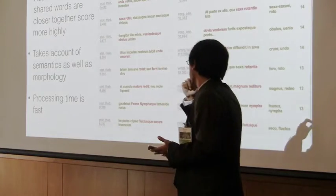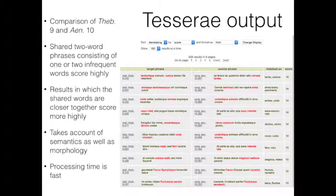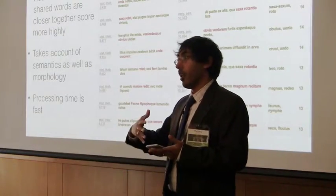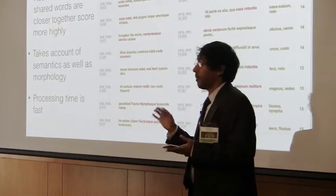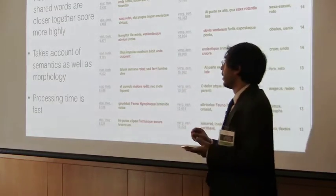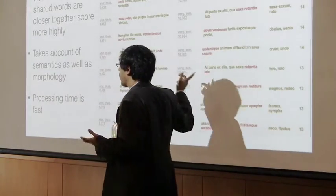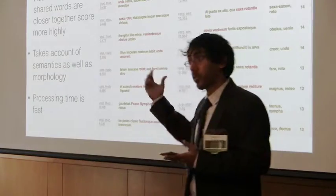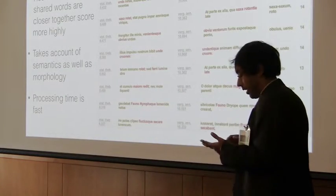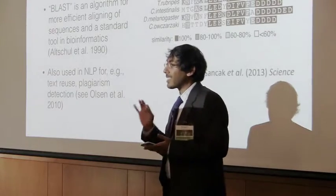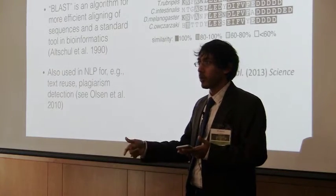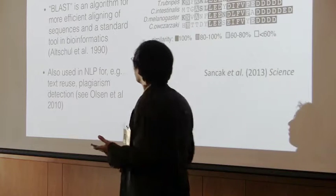So this is a very brief account of Tesserae's strengths. It takes account of semantics as well as morphology. That was a recent addition in 2015, so it looks at the definitions of the words in English. And so even when there isn't necessarily a direct Latin etymological equivalent between two words, the semantic equivalency between them will cause them to score more highly. And the processing time is fast. It's not as fast as Diogenes, for obvious reasons, but it's still pretty fast. And that's important.